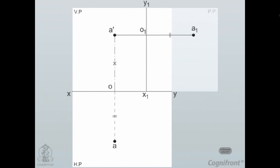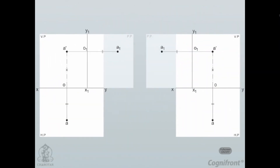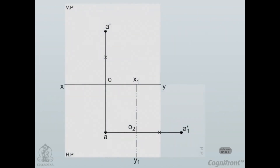Note that A1 O1 is equal to AO. When seen from the left, the new reference line and the side view are placed to the right of the front view. When seen from the right, they would be placed to the left of the front view. Thus, the view seen from any side of the front view is placed on its other side. The figure shows the PP rotated about the HP. The view on the PP now lies on the projector drawn through the top view A, and hence it is called the auxiliary front view. In this case, A dash 1 O2 is equal to A dash O.